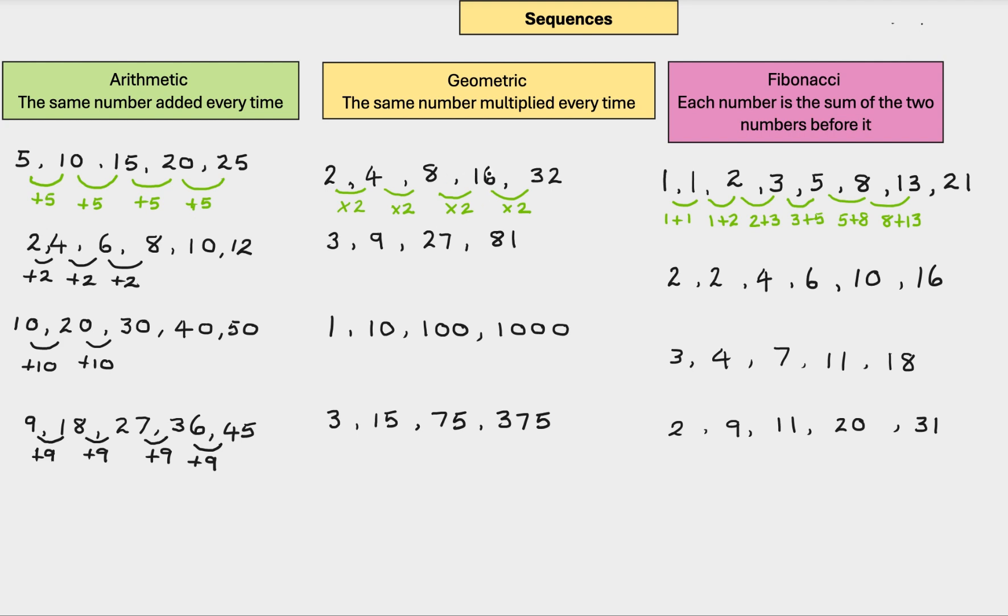The same number multiplied every time. So it's the same number multiplied, opposed to adding, every time. So in this example, we have 2, 4, 8, 16, 32. So we're going to multiply by the same number. So 2 and 4, we've multiplied that 2 to get 4. So we started off with 2, we now have 4.